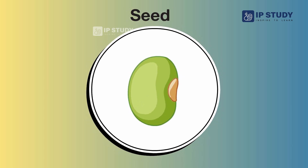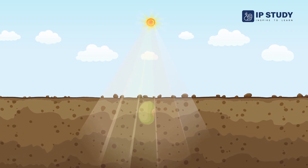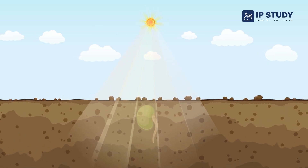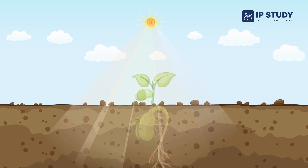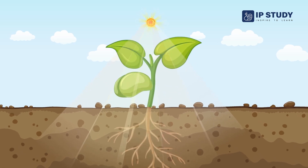Seed. Seeds help the plants reproduce because they can grow into a new plant.